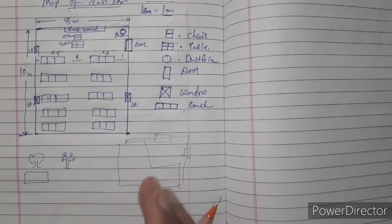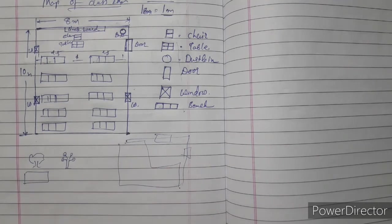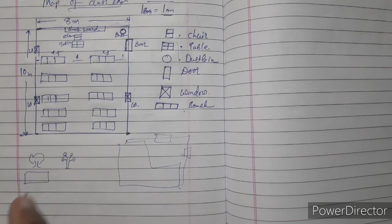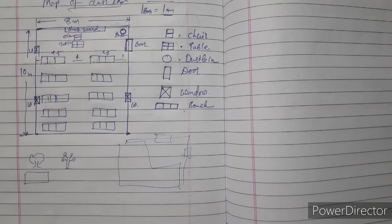And make a map of your playground. So here our exercise 10.2 is completed. Thank you.